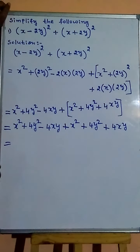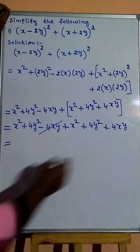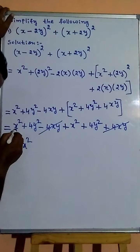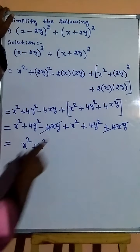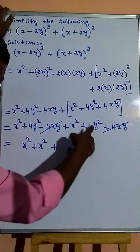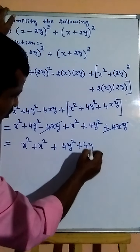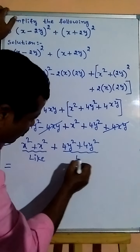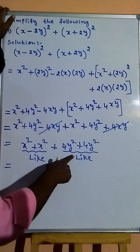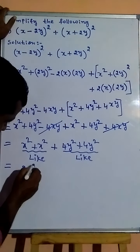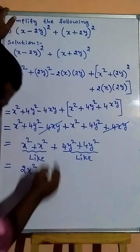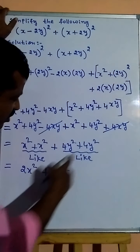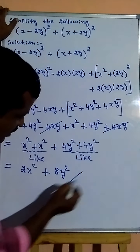Okay, now look at the like terms. Minus 4xy plus 4xy get cancelled. So for the x squared terms: 1x squared plus 1x squared equals 2x squared. For the y squared terms: 4y squared plus 4y squared equals 8y squared. 4 plus 4 is 8. So the answer is 2x squared plus 8y squared.